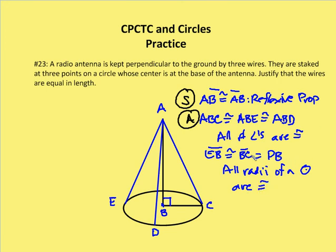So I can say that, and there is my side. So I know by the side angle side postulate that the wires AC, AE, and AD are all going to be congruent because I have three triangles, and AC, AE, and AD are all corresponding parts of those three congruent triangles.